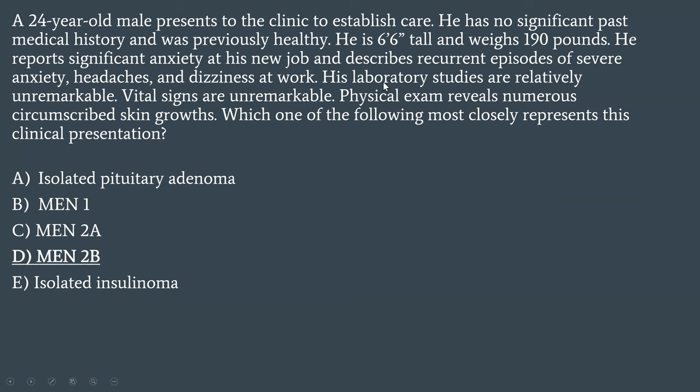The four Ps of pheochromocytoma — pain, pallor, pressure, and perspiration — occur when catecholamines are released into the bloodstream. Some may ask: wouldn't he have hypertension or associated renal problems from significant hypertension? This is a common way they test this. When catecholamines are secreted into the system, they're often done so in an episodic manner.